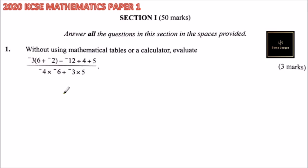Question number one: Without using mathematical tables or a calculator, evaluate. So here we have minus 3 times bracket 6 plus minus 2, minus minus 12 divided by 4, plus 5. All divided by minus 4 times minus 6, plus minus 3 times 5.